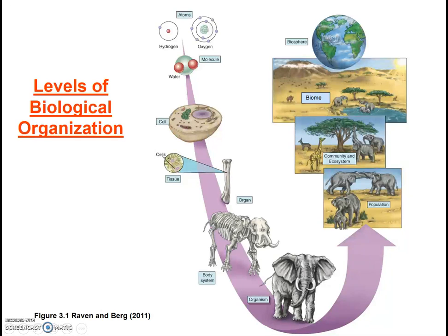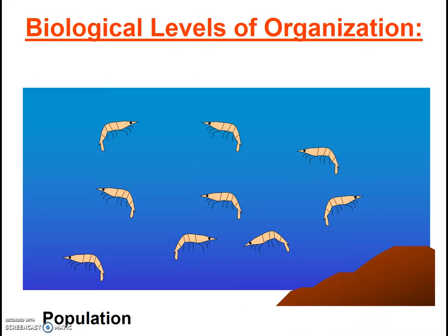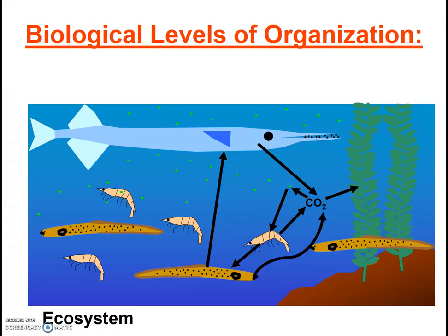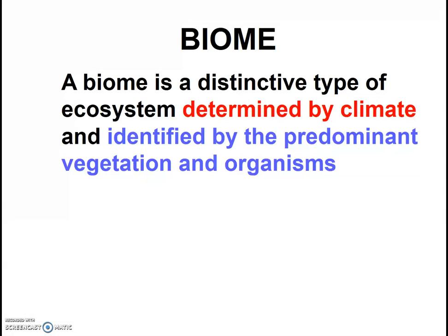The population is a group of individuals of the same species living in the same place at the same time. A community is all the populations — whether they're plants or animals or bacteria or fungi or whatever — living together in the same area at the same time. An ecosystem also includes the community but also its non-living components: the gases, the rocks, the soil, the air, and all sorts of things like that. A biome is a distinctive type of ecosystem, determined by climate and identified by the predominant vegetation and organisms.